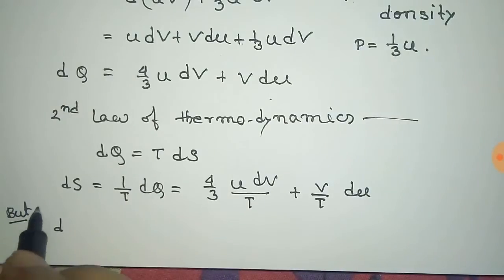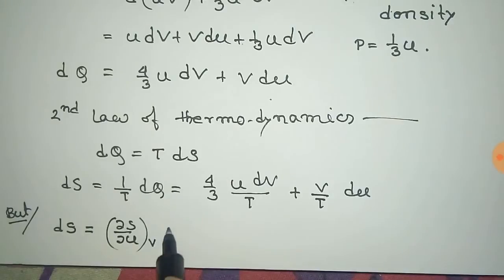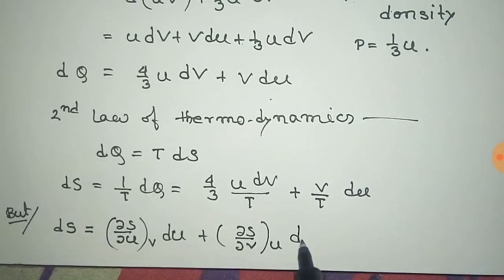We can also write dS = (∂S/∂u) du + (∂S/∂V) dV at constant u into dV.